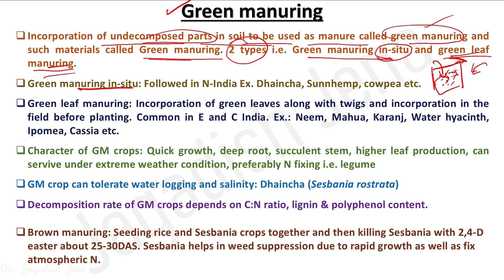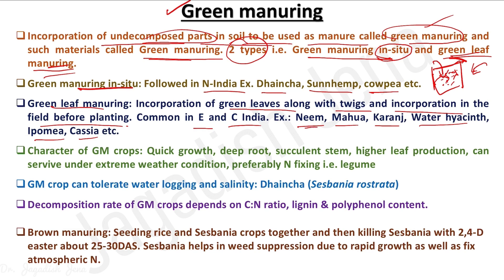Green manuring in situ is mostly followed in North India. Example crops for in situ green manuring are Dhaincha, Sunnhemp, and cowpea. Green leaf manuring involves incorporation of green leaves along with twigs brought from outside, and is most commonly used in eastern and central India. Examples include neem, mohua, karanj, water hyacinth, Ipomoea, and cassia — found in field bunds, forests, aquatic bodies, or waterlogged conditions.